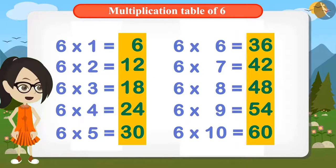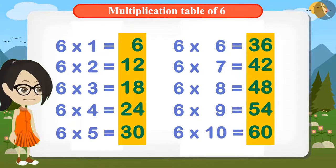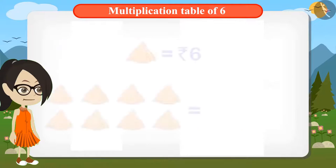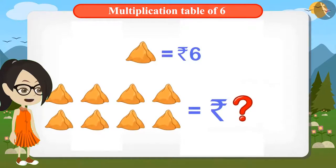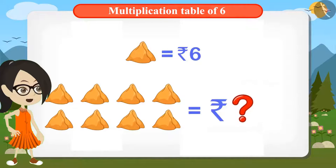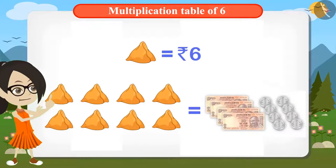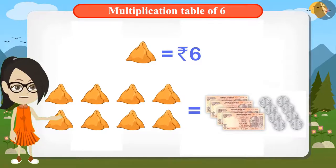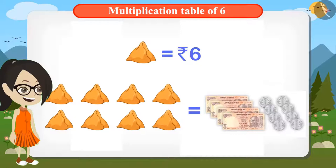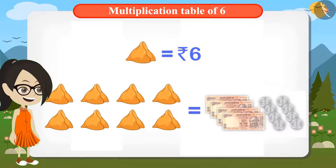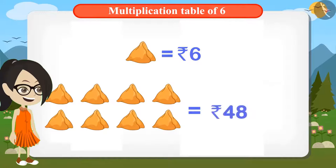We have already written down the table of six. Now we can find out the cost of eight samosas. That will be six times eight, which is forty-eight rupees. Now I will give forty-eight rupees to Chaggu Uncle. Vandana has figured out that eight samosas will cost forty-eight rupees at the rate of six rupees per samosa.